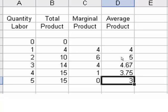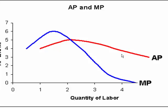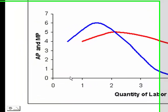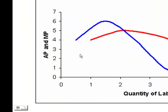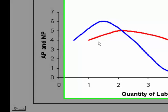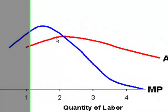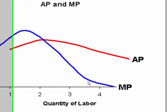The next step is to graph them. I have followed the accepted protocol of graphing the marginal as the change between zero and one, or at the midpoint. You can see that when marginal product is increasing, it is pulling average product with it. But when marginal product is falling, it is also pulling down the average product.